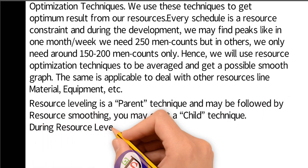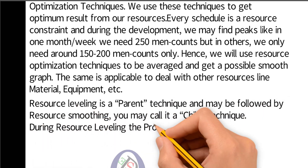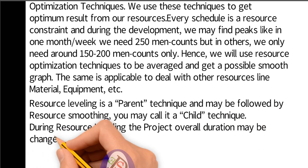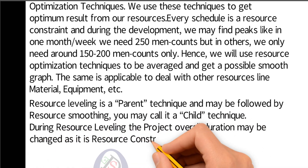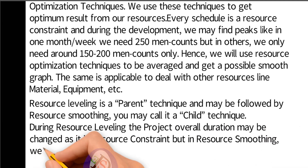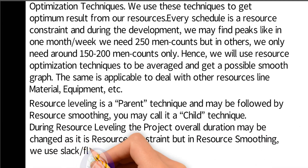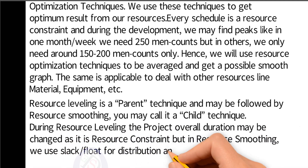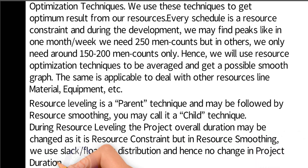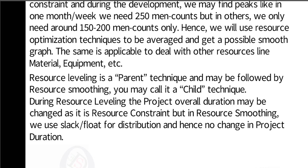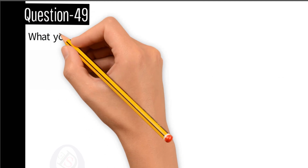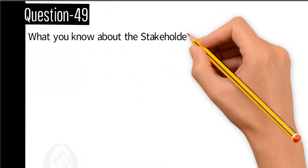During resource leveling, the project overall duration may change as it is resource-constrained. But in resource smoothing, we use slack or float for distribution, and hence there is no change in project duration. Question number 49: what do you know about stakeholders on any project?